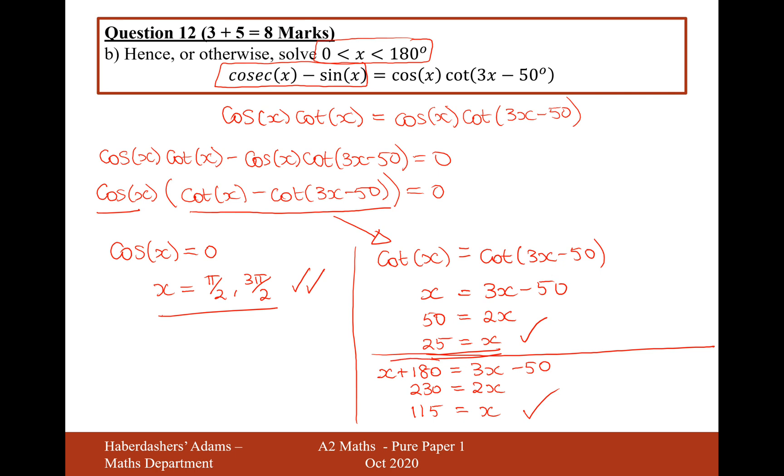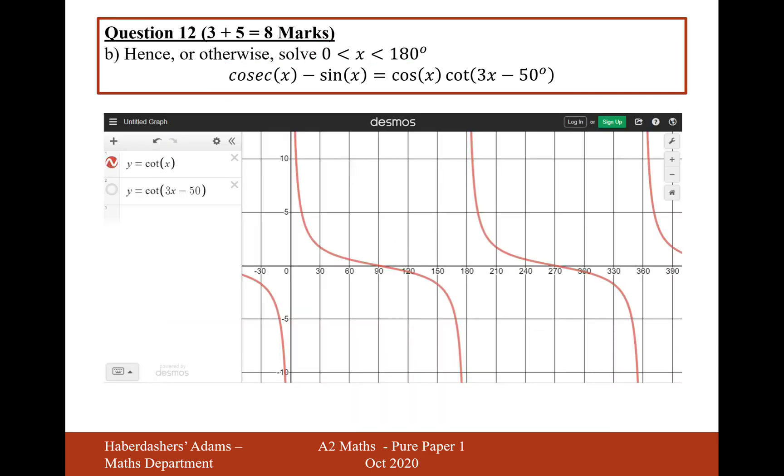And the reason that we have this extra solution here, where we have to do x plus 180, is because the cot graph repeats itself every 180 degrees. So if I show you this visually...